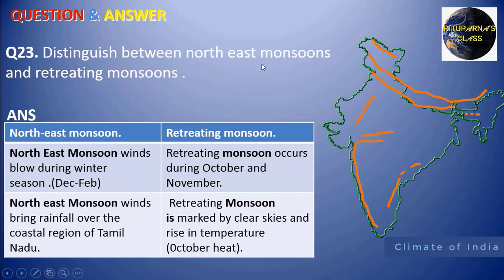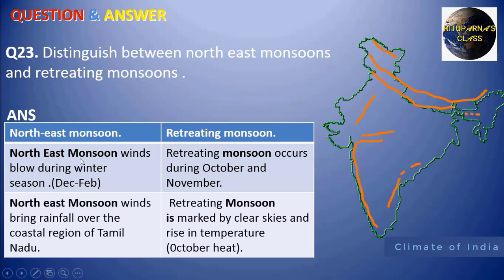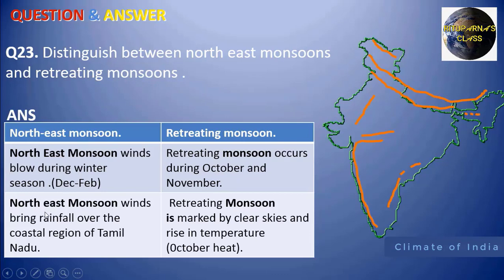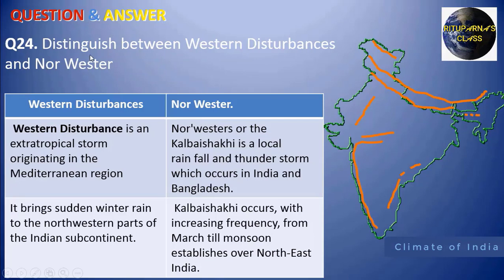Next: distinguish between the northeast monsoon and the retreating monsoon — a very common and confusing question. The northeast monsoon winds blow during the fully developed winter season, from December to February. The retreating monsoon occurs just after the rainy season — October and November, sometimes including September. The northeast monsoon brings rainfall over the coastal region of Tamil Nadu, but the retreating monsoon does not bring rainfall — it is marked by clear skies and rising temperature, known as the October heat.